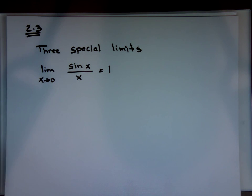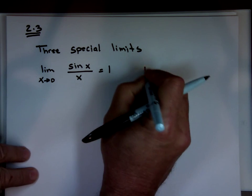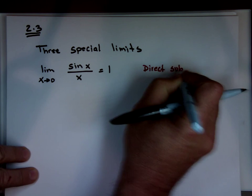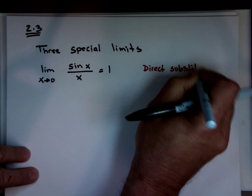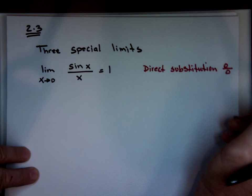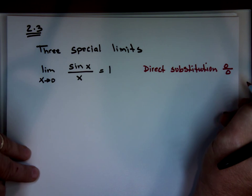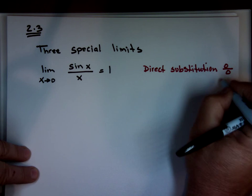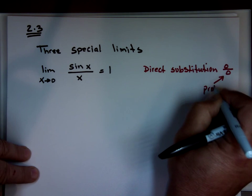The only way to prove that and show it's correct is by taking the table, because if you do direct substitution you're going to get sine of zero over zero — which is zero over zero. And zero over zero is not a one. So your answer is one, but you can't get it by direct substitution because you're dividing by zero.